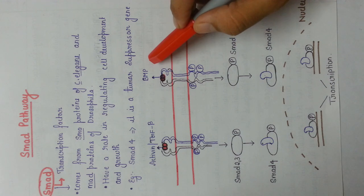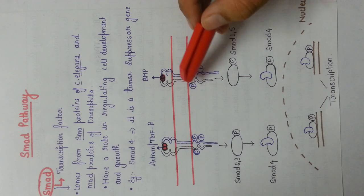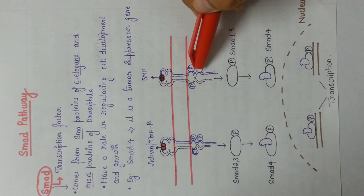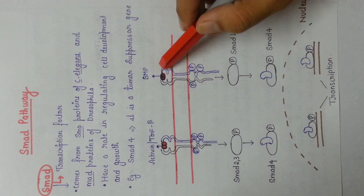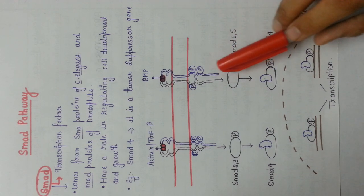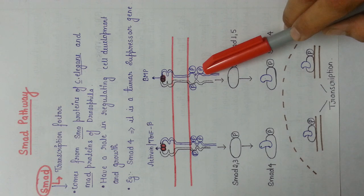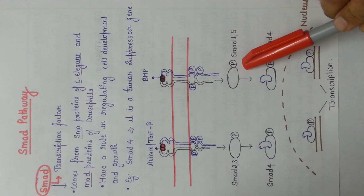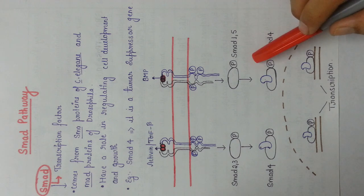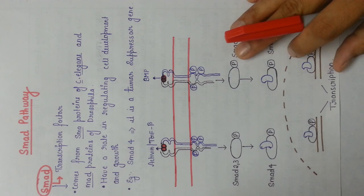Similarly, your bone morphogenetic proteins will also bind to these receptors and phosphorylate receptor 2 first. After this phosphorylation, receptor 2 will phosphorylate the serine-threonine residues on receptor 1, and this will lead to the phosphorylation of SMAD1 and SMAD5, which will be released from the cytosolic domain of your receptor into the cytosol, where they will dimerize with the SMAD4 protein. Ultimately, translocation of this dimer to the nucleus leads to DNA binding and transcription.